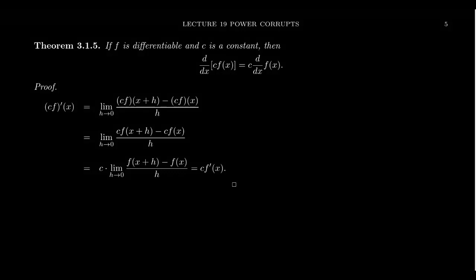In this video, we want to develop some more properties of the derivative. For example, if f is differentiable — that is, f prime of x exists at the point — and c is any constant number, then the derivative, d/dx of c times f of x, is just c times the derivative of f of x.